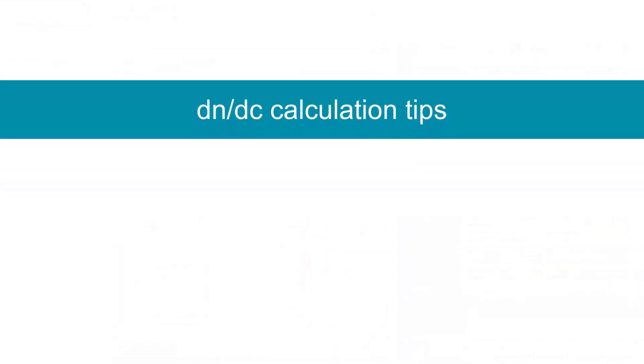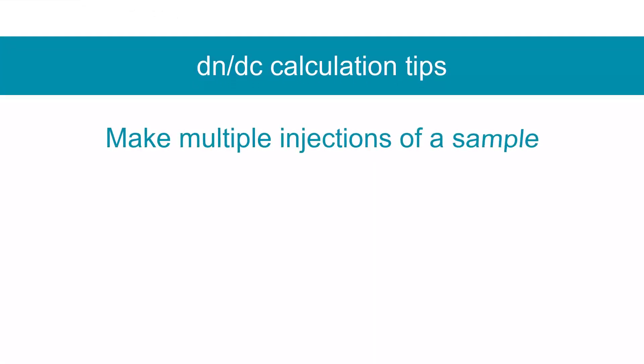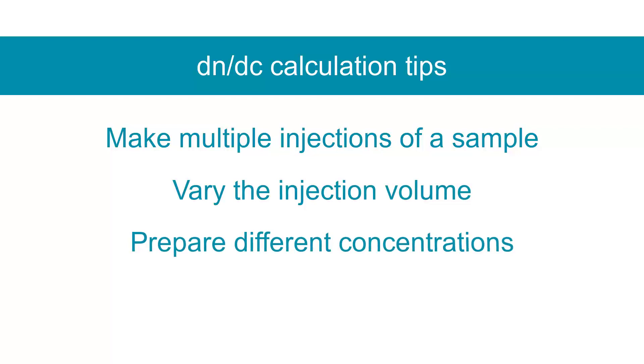It is recommended to make multiple injections of a sample when calculating its DNDC value. Varying the injection volume or preparing the sample at different concentrations will help ensure your final value is accurate.